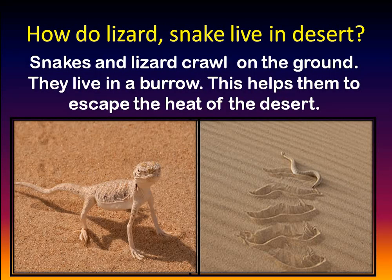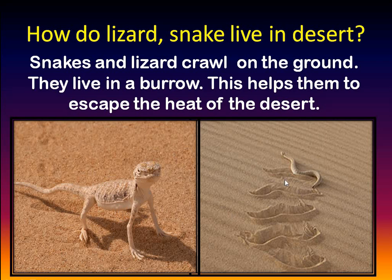Now, snake and lizard. Look at this picture — you can see how a lizard, which normally crawls, stands on its toes. When it stands on its toes, its body gets lifted up so that it doesn't touch the hot sand below. Similarly, a snake moves in a zig-zag crawling motion so that as little of its body as possible touches the hot sand.